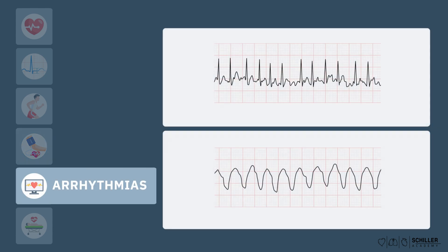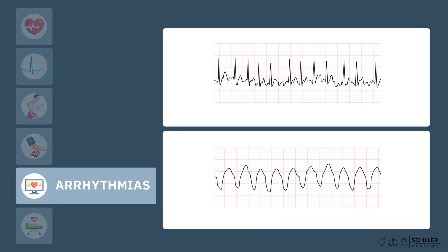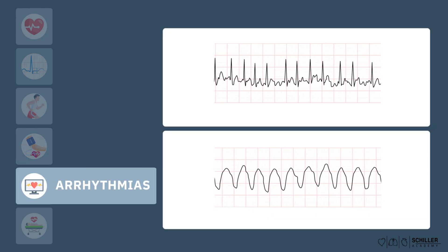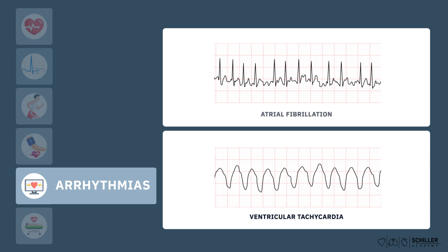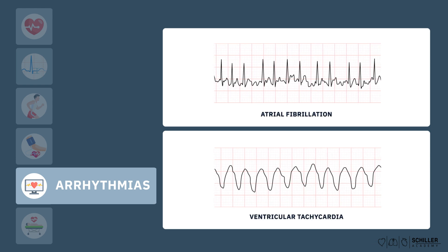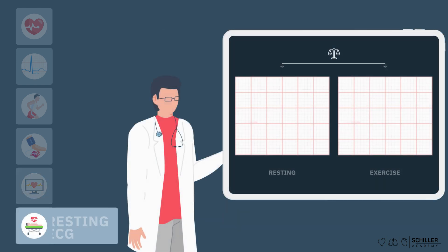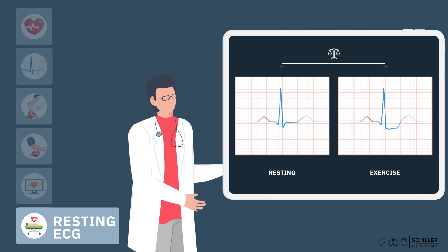The exercise ECG can detect exercise-induced arrhythmias, such as dangerous ventricular arrhythmias or atrial fibrillation, which might not be evident at rest. Physicians also compare the baseline resting ECG with the exercise ECG to identify any new or worsening abnormalities during exercise.